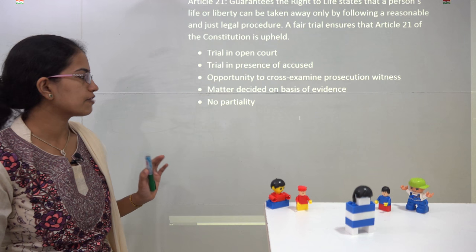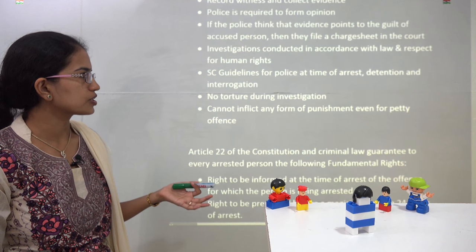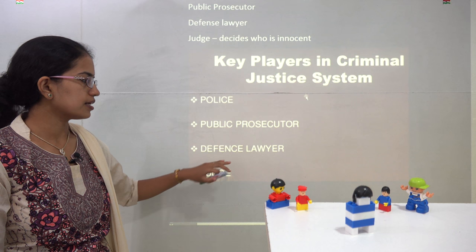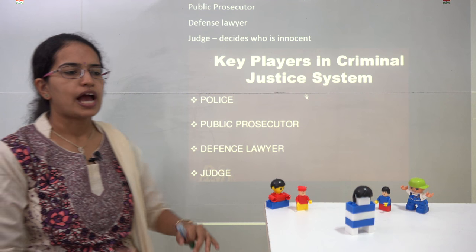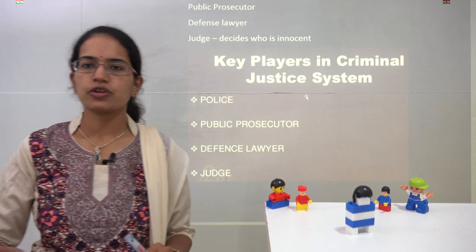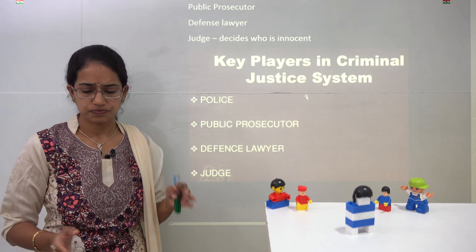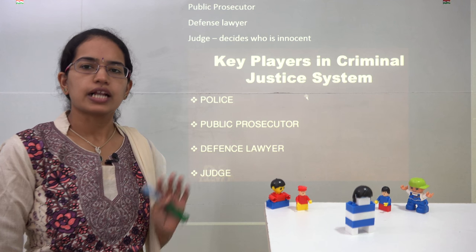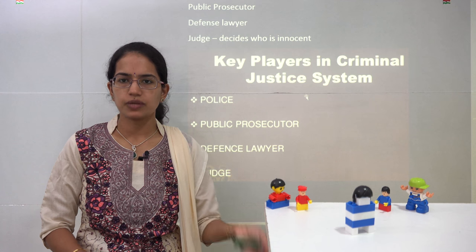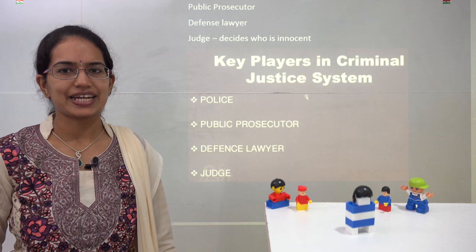So there are 4 key role players in the criminal justice system: the police, the public prosecutor, the defense lawyer, and the judge. We understood how the criminal system works, the role of the police, the public prosecutor, and the judge. With this, we cover Chapter 6 of Class 8 NCRT Political Science. We will be covering further lectures in the upcoming classes. Stay tuned and have a good day ahead.